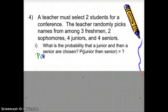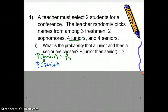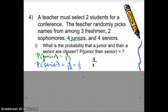The probability of choosing a junior first: there are four juniors out of 13 total students, so four-thirteenths. Now for a senior — since these are dependent events and a junior was already picked — there are still four seniors but only 12 people remaining, giving four-twelfths which reduces to one-third. Multiplying four-thirteenths times one-third gives four out of 39 — that's the probability of choosing a junior then a senior.